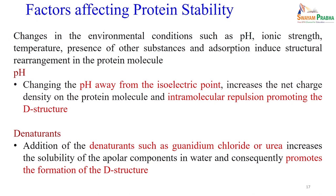Different environmental factors affect protein stability: pH, ionic strength, temperature, presence of other substances, and even surfaces (adsorption). Regarding pH: at the isoelectric point the net charge is zero. If you increase or decrease pH, the protein gains positive or negative charge, which contributes to intramolecular interactions and may lead to unfolding.